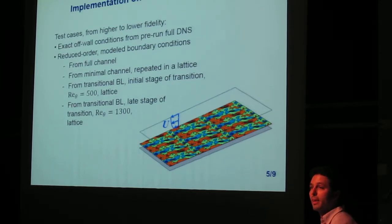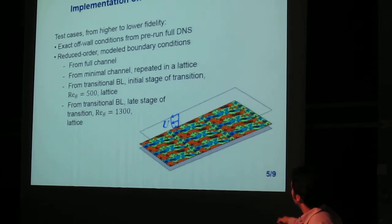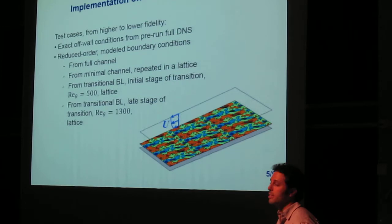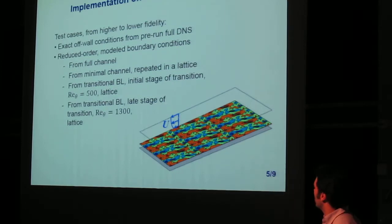And then we would go to the idea of imposing a lattice by running a smaller channel, a minimal channel, which would be just one-third in span and streamwise direction as our full channel, but with the full R_tau, and store those historical boundary conditions, do the model reduction, and then impose a lattice of those as a boundary condition for the full flow.